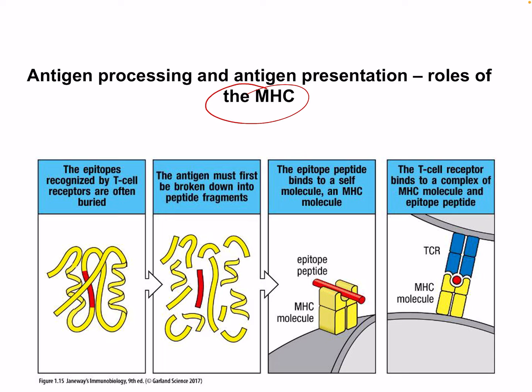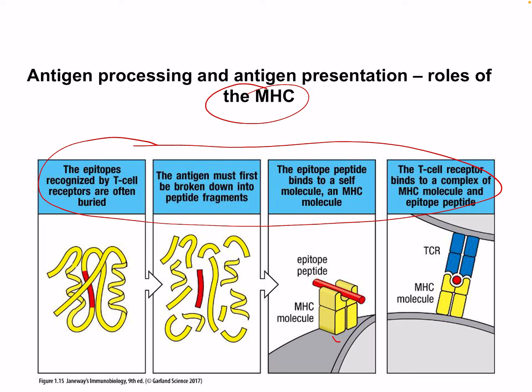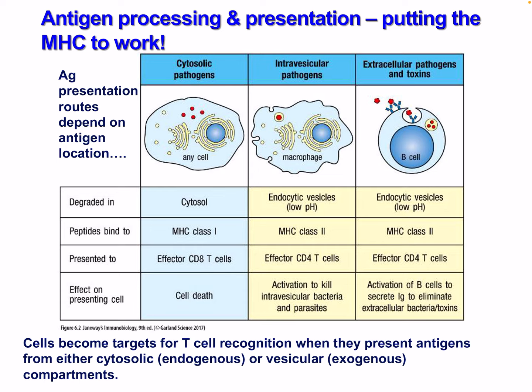Hello everyone. Today we're looking at the role of the MHC. I recommend you check out a previous lecture where we discuss the structure of the MHC and how it works before coming to this one. Here's a brief overview: our MHC is presenting an epitope peptide, allowing it to be presented to a T cell. We have MHC class 1 and 2, which we'll discuss — antigen processing and presentation, putting the MHC to work.